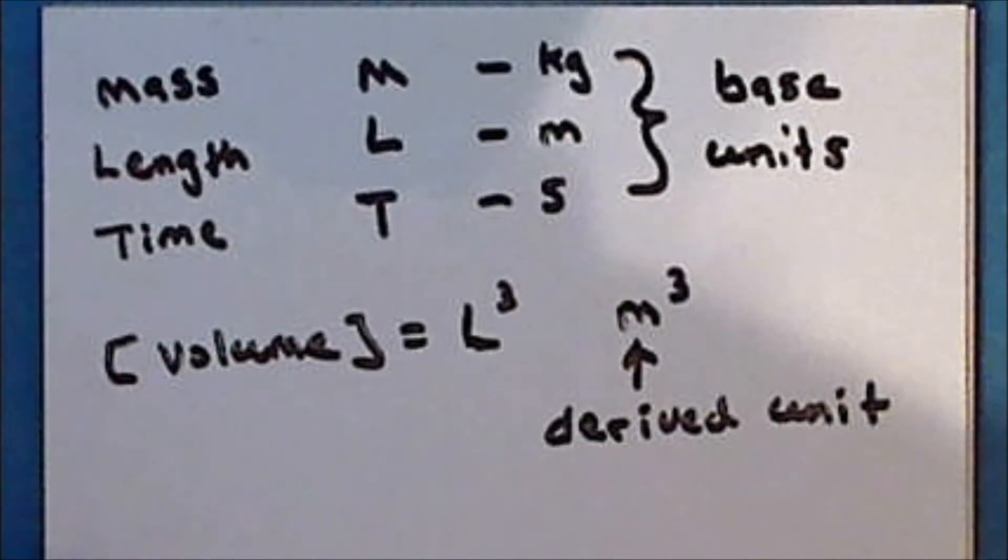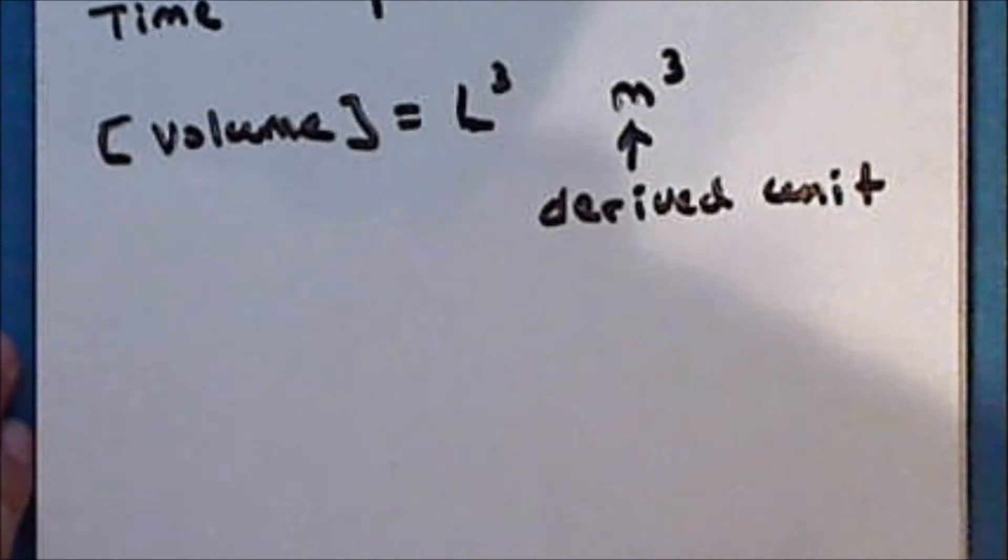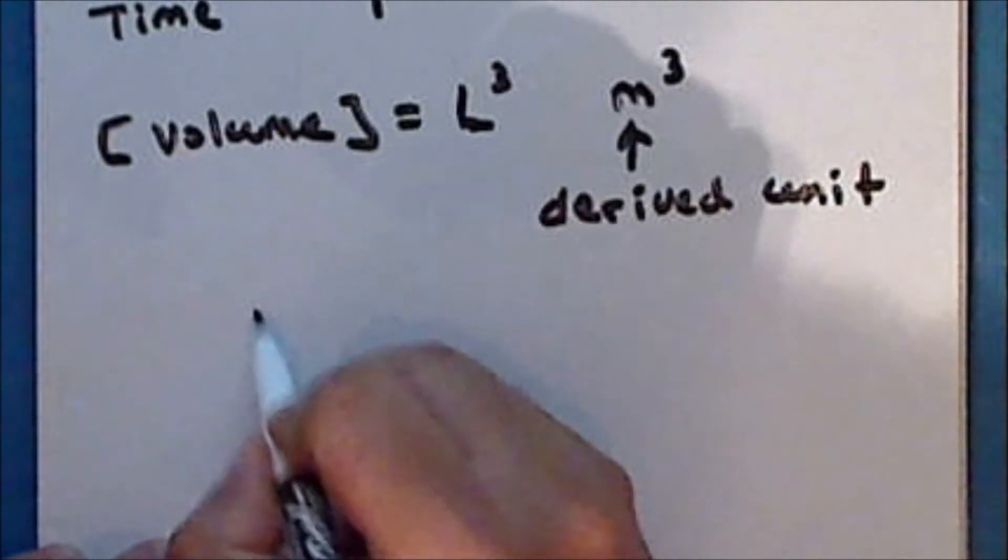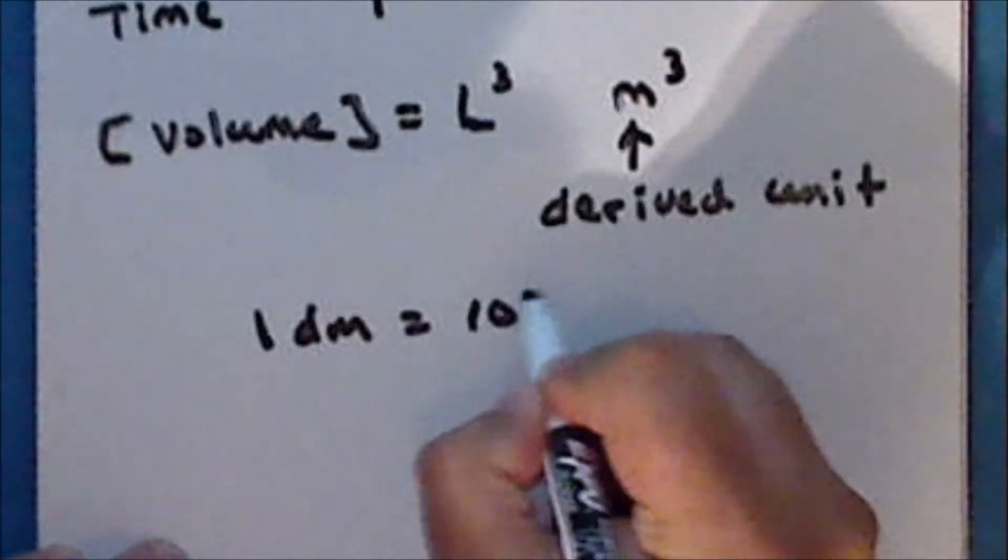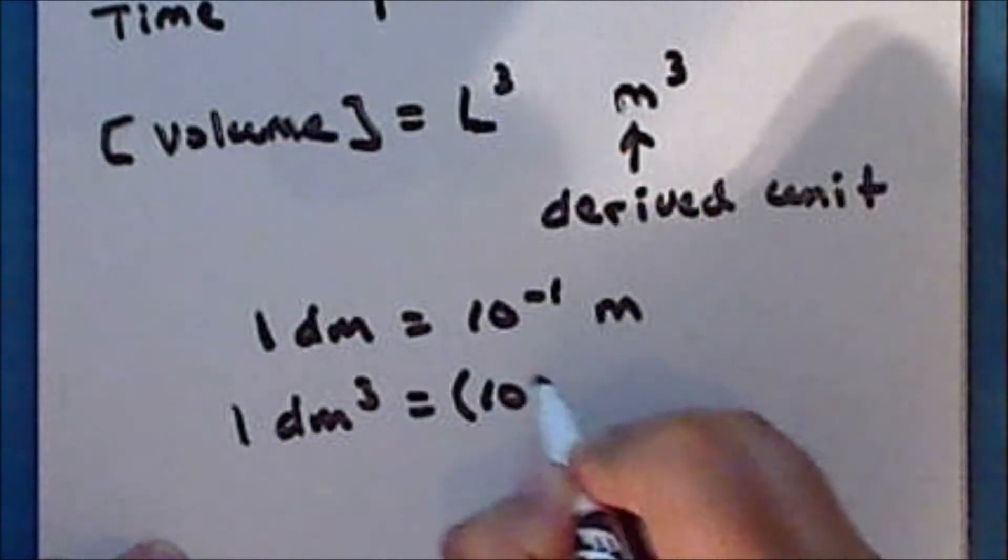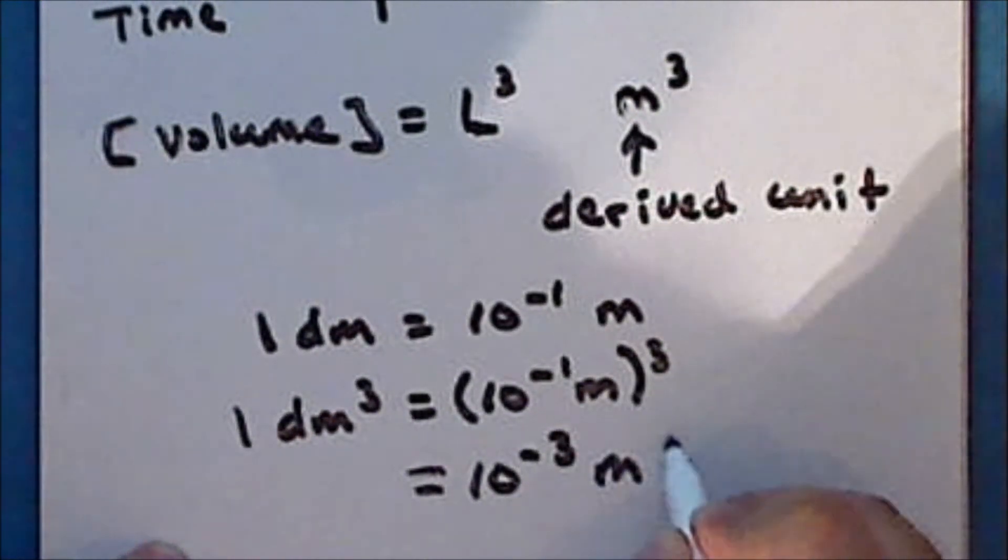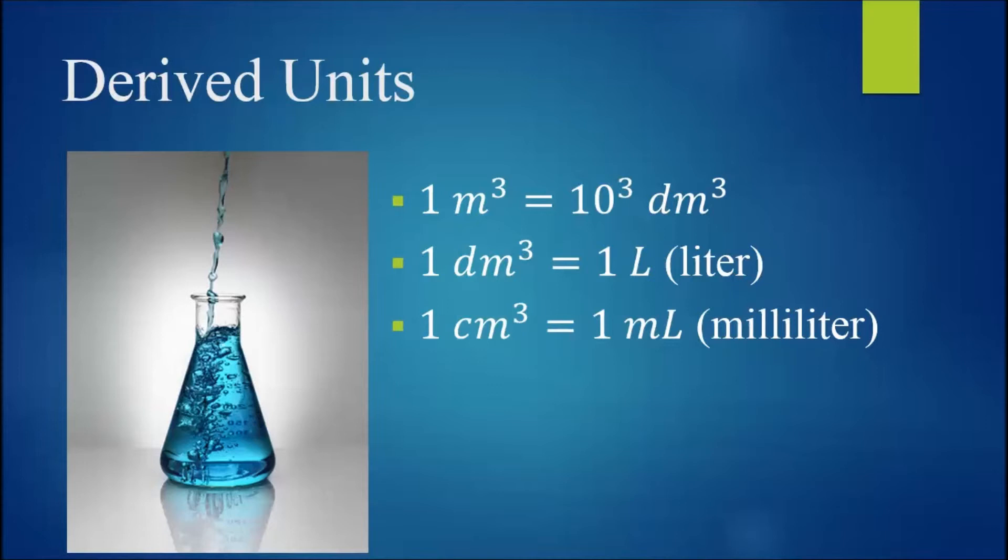However, the cubic meter is a relatively large volume. Here we see a young girl holding a meter stick inside of a cube with a volume of one cubic meter. Notice that the size of a meter is on the same order of magnitude as the size of a human. A much more manageable volume is the cubic decimeter. Now, in one decimeter, there is one tenth of a meter. And so in one cubic decimeter, there is one one thousandth of a cubic meter. And if we're talking about the volume of a fluid, then one cubic decimeter is also called one liter, so that one cubic centimeter is equal to one milliliter.